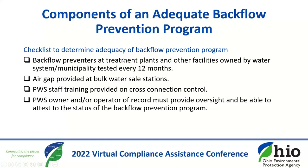You need to ensure that backflow prevention needs for all water connections have been identified and addressed through initial inspections, periodic surveys, and investigations every five years to determine current water use practices. You need a mechanism to identify needs on new connections as well as existing connections. Don't forget about backflow preventers located within your treatment plants and other facilities owned by the public water system — these also must be tested every 12 months. We want air gaps provided at bulk water sales stations. We highly encourage public water system staff to receive training on cross-connection control and backflow prevention. The public water system owner or operator of record must be able to provide oversight and attest to the status of the backflow prevention program.